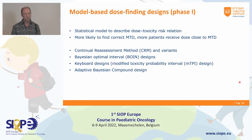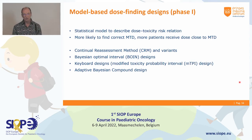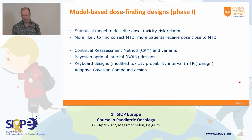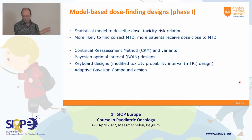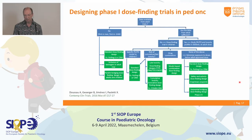Here are examples of types of model-based designs: the continual reassessment method (CRM) and a number of variants, the Bayesian optimal interval designs, BOIN designs, keyboard designs, modified toxicity probability interval — we saw an example of that in the past few days — and the adaptive Bayesian compound design. This list continues to grow.